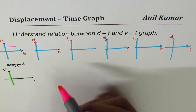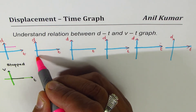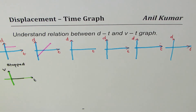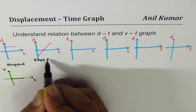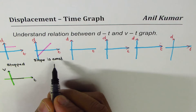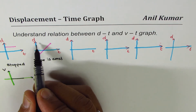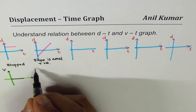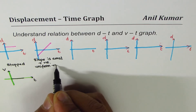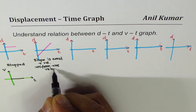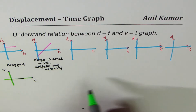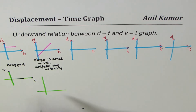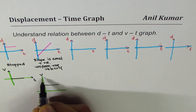In the second case, consider a displacement that is increasing with a constant slope. The slope represents the rate of change of displacement, which is velocity. The slope is constant and positive, meaning we are talking about uniform positive velocity. On the velocity-time graph, this appears as a horizontal line at a positive constant value.